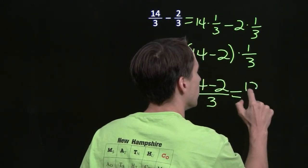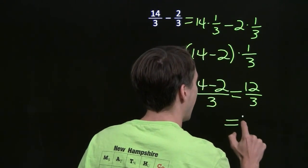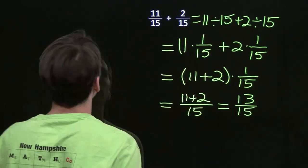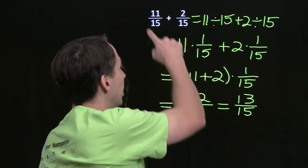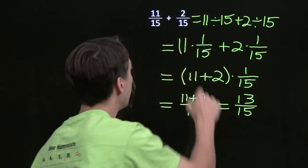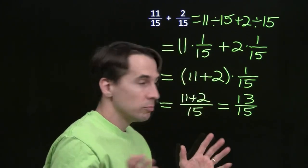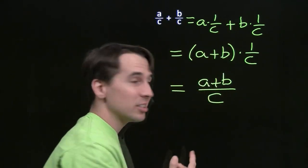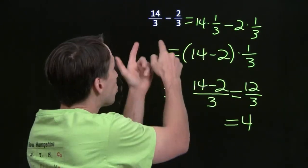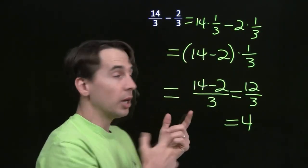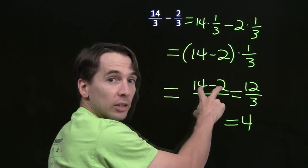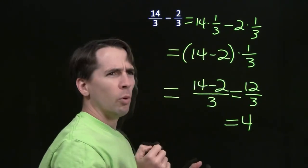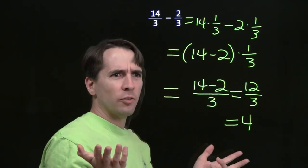14 minus 2 is 12. 12 over 3 is 4. So: to add two fractions with the same denominator, keep the denominator the same and add the numerators. To subtract one fraction from another when the two denominators are the same, subtract the numerators and keep the denominator the same. But what if the denominators in the original fractions are different? Then what do we do?